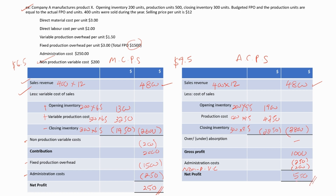As you can see, the profit figures are not the same. Under marginal costing it is $250; under absorption costing it is $550. This is because we value the inventories using different figures — under marginal costing we valued inventory using $6.5, but under absorption costing we used $9.5. This is the reason why the profit figures are different.